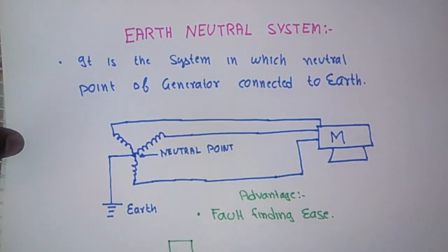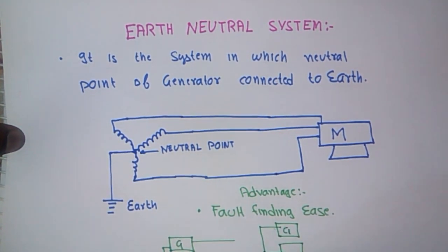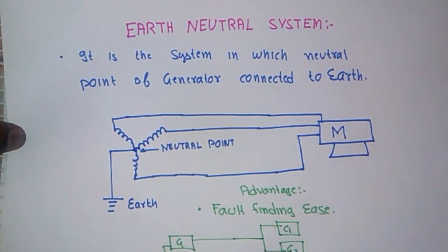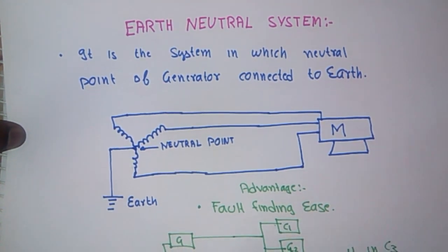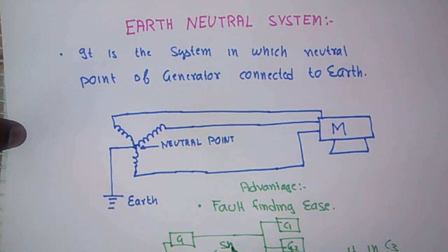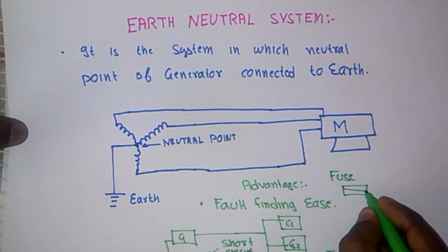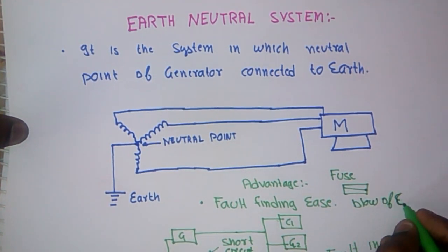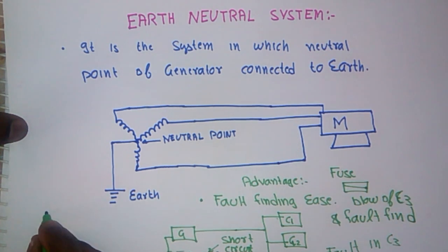Consider that one generator is giving a supply to the many consumer. In this case, the fault finding is difficult, but if we have an earth neutral system, if the fault occurs in any consumer, that will cause a short circuit and the fuse in that consumer is blown and the fault finds easily.